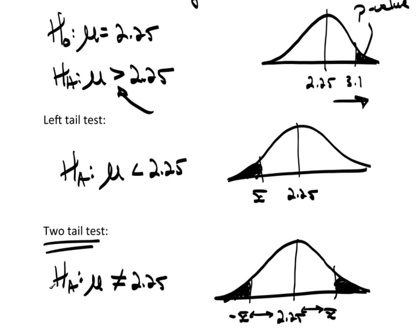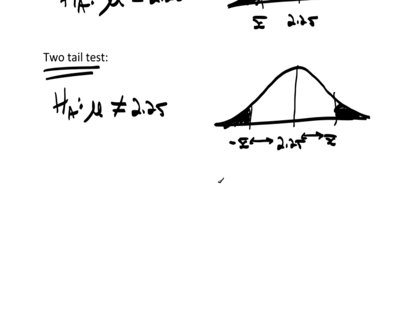So those are your three options. Your null hypothesis, for my students, would always be equals whatever value. And then the alternative hypothesis, you have to decide is it greater than, less than, or not equal to.